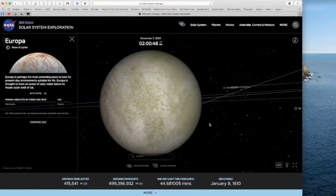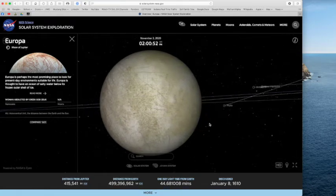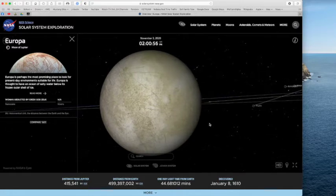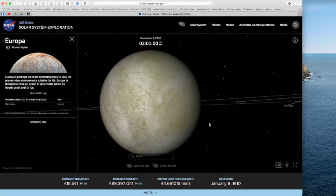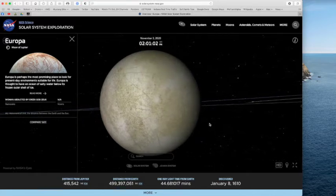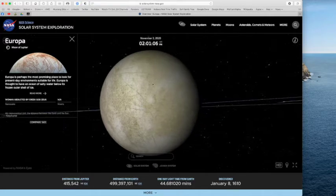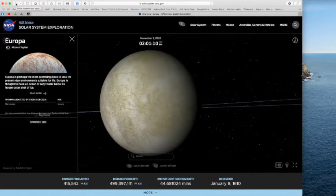Let's look quickly at the second one here called Europa. Europa is an ice-covered moon. You can see very large cracks in Europa. It is perhaps the most promising place to look for present-day environments suitable for life. Scientists think that the ocean is of salty water beneath this icy shell. So this is the moon called Europa.